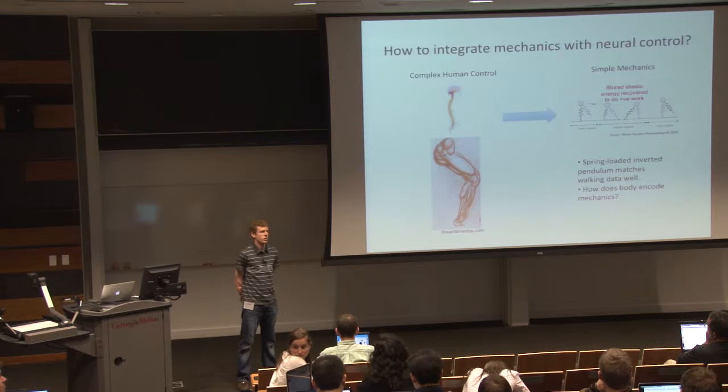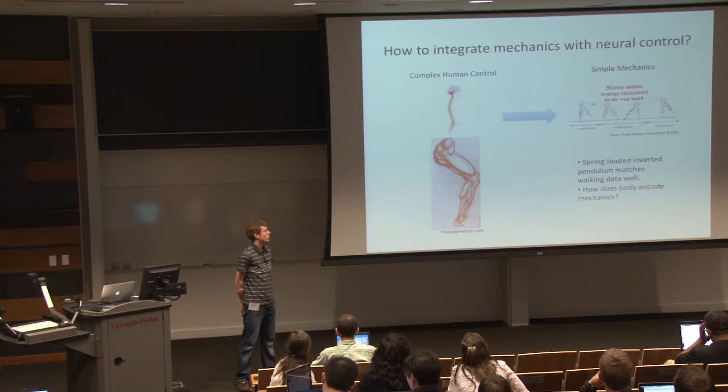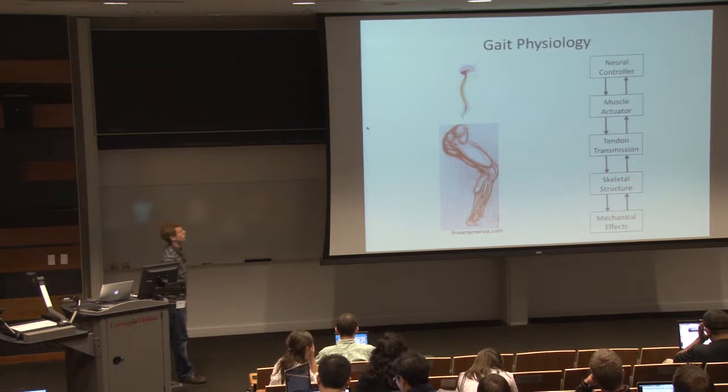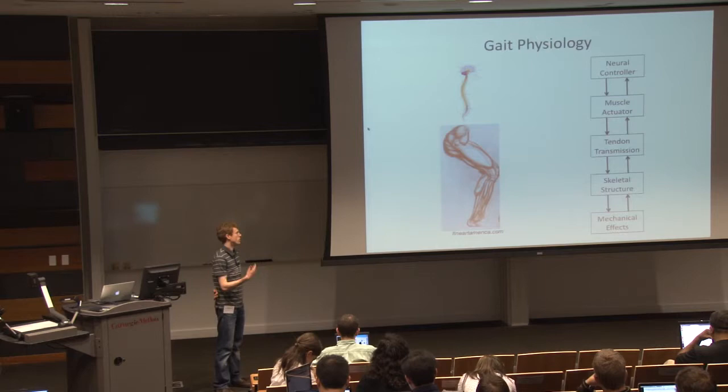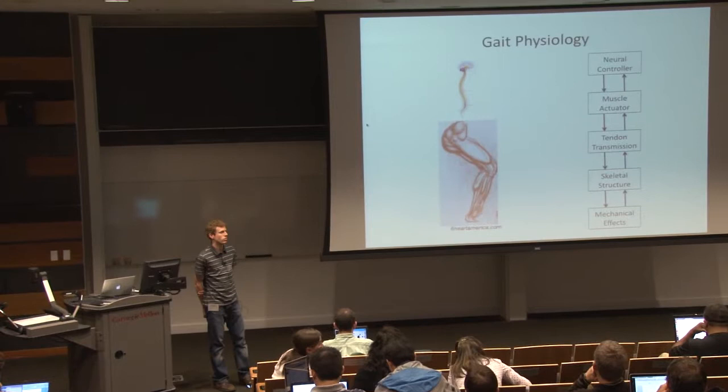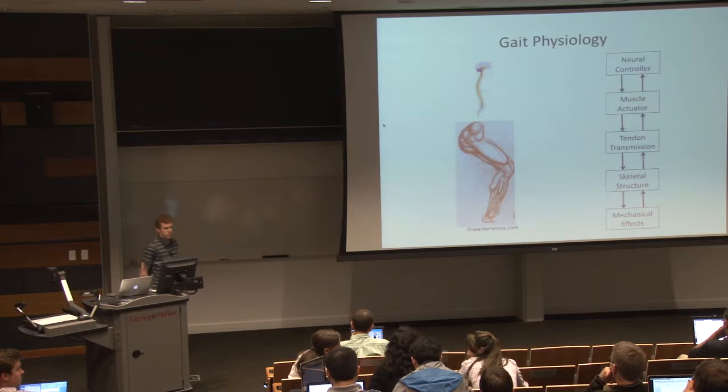It would be nice to look under the hood and figure out what's going on from a neural perspective, from a muscular control perspective, and that's what this project tries to get at. One way to do that is to look at the hierarchy shown on the right side of the slide: the neural controller, which is the central nervous system — feed forward, feed back, reflexes, muscle actuators, transmission to the skeleton and tendon, and the interaction of the skeleton with the environment, labeled as mechanical effects.